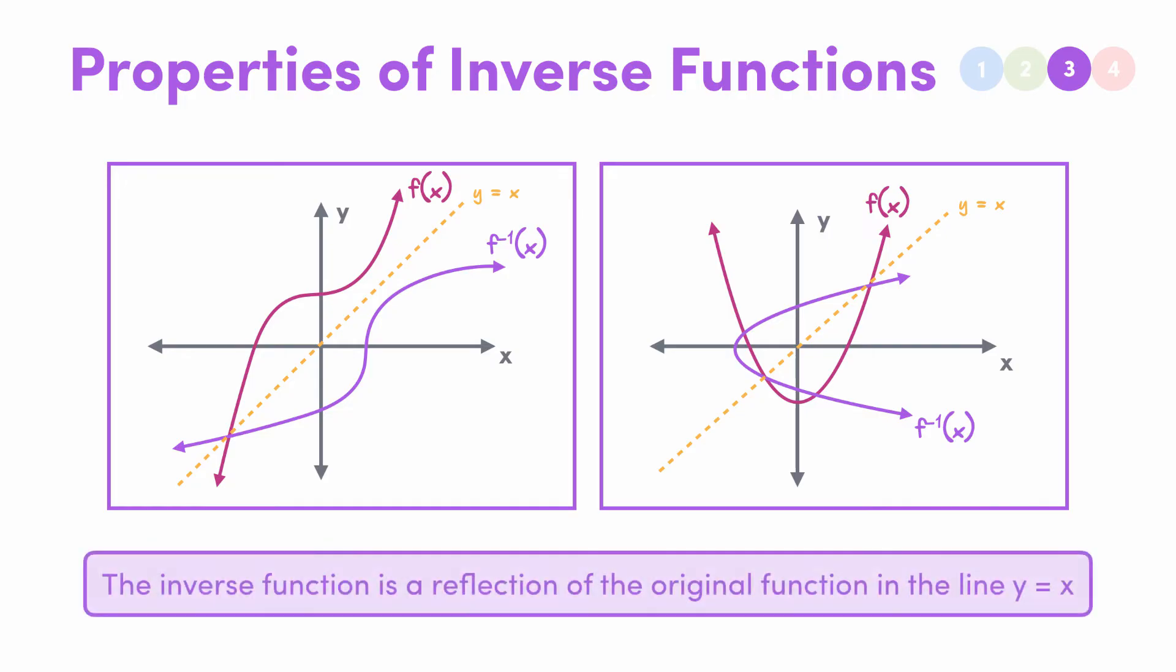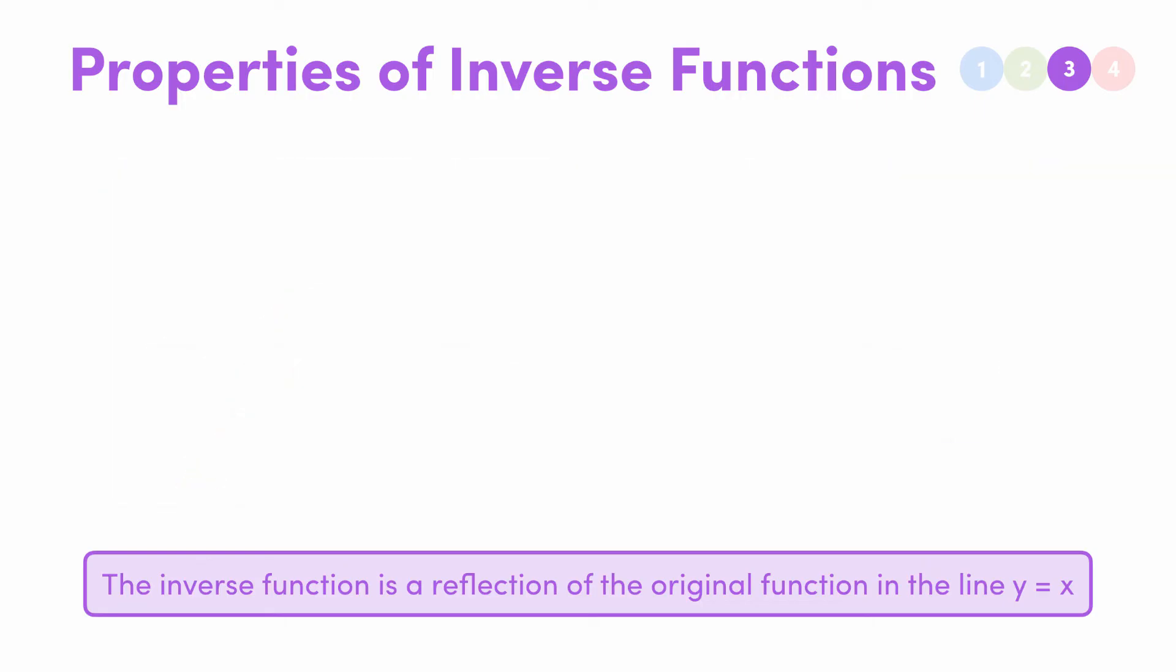Graphically, the inverse function, or relation if you want to be technical, is a reflection of the original function in the line y equals x. So for example, here's y equals x squared, and the line y equals x. The inverse is a reflection in this line, but that means that points on the line are going to be shared by both. So since y equals x squared touches the line at both the origin and x equals 1, the inverse also goes through these points.